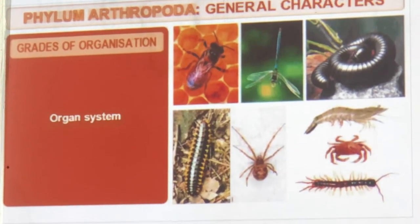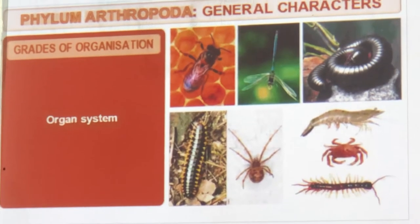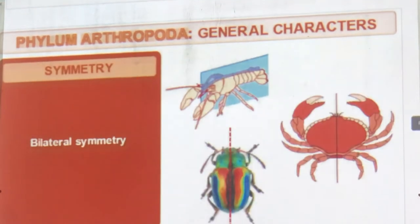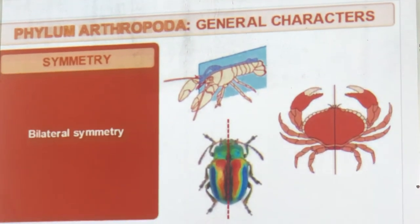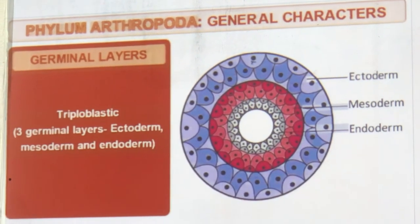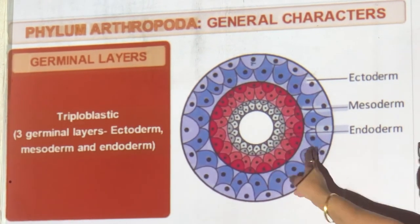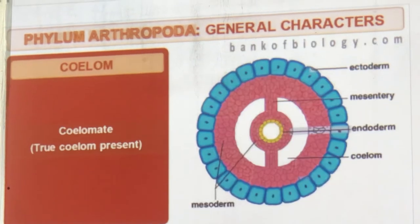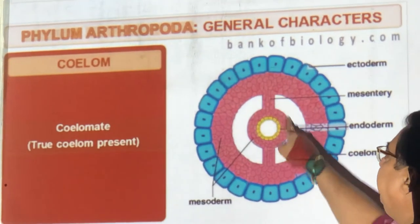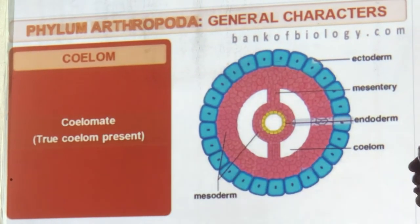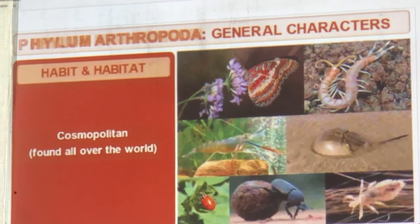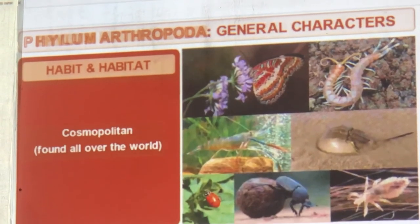Now the largest phylum — Arthropoda — with the most organisms on Earth. All have organ systems developed. Bilateral symmetry — can be cut left and right. Three germ layers: ectoderm, mesoderm, and endoderm. True coelom. They are cosmopolitan — found in air, water, and on land. There is no place where you will not find an arthropod or insect.